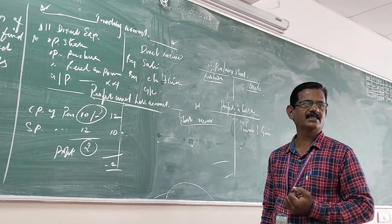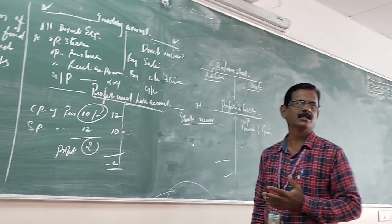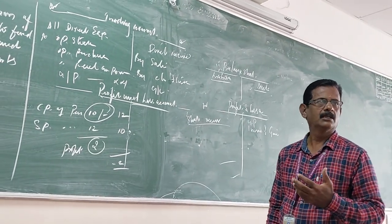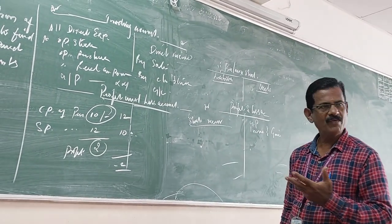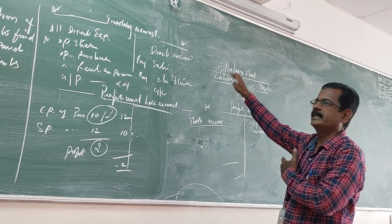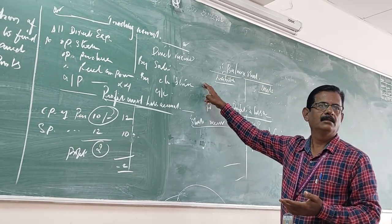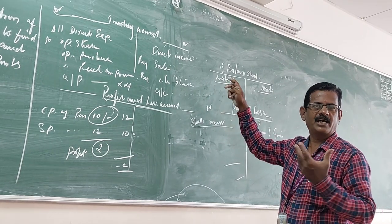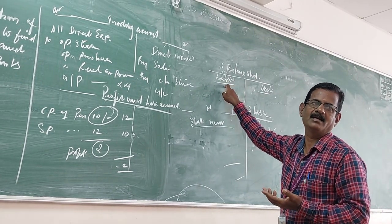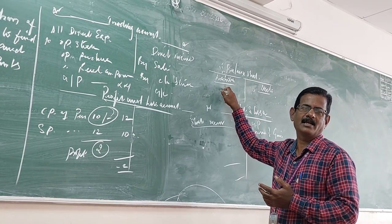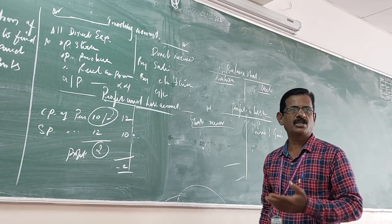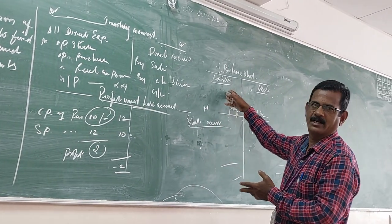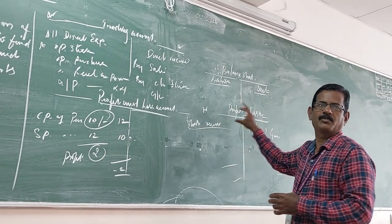On the asset side should record all assets: cash in bank, furniture, machinery, land, any prepaid expenses, closing stock, debtors, goodwill. Liability side: capital, creditors, net profit.